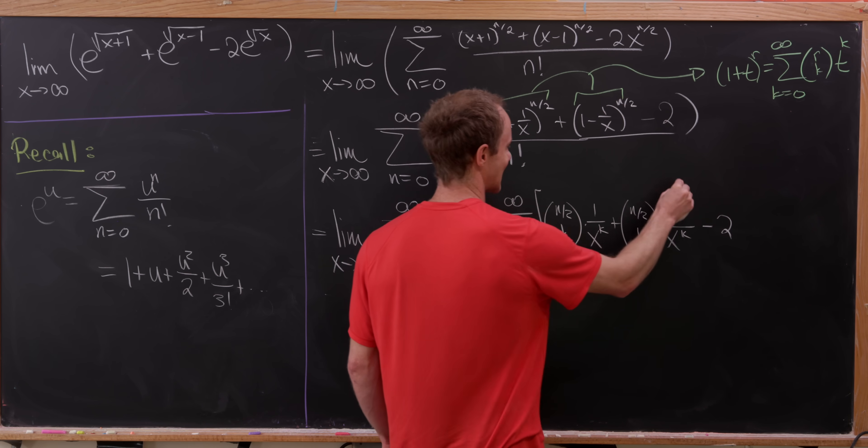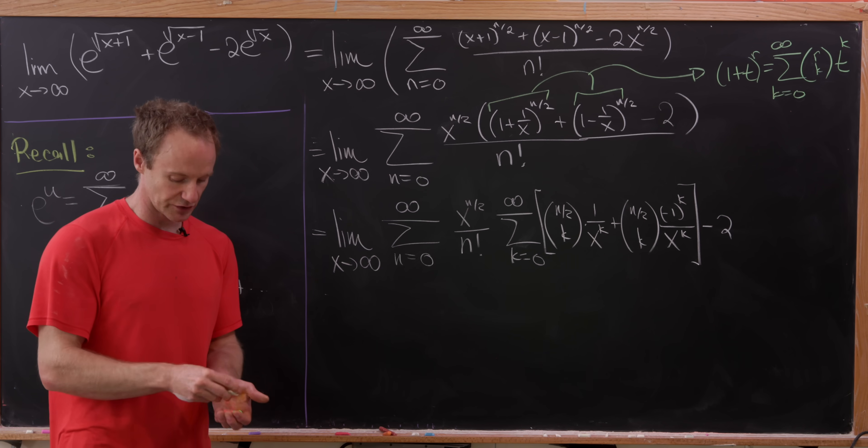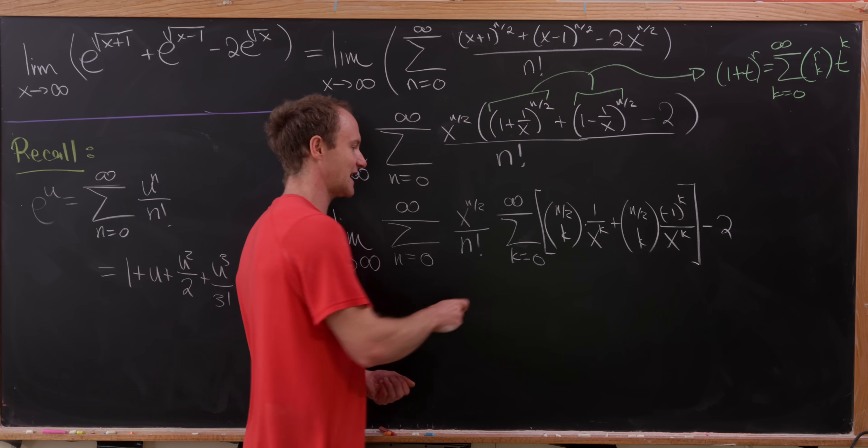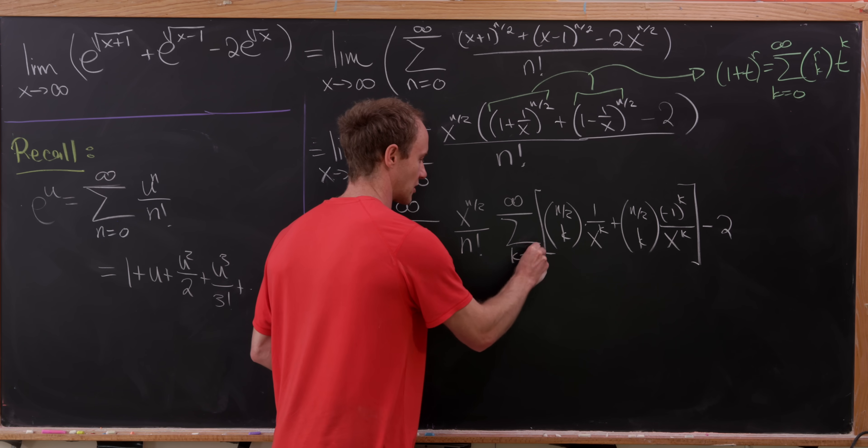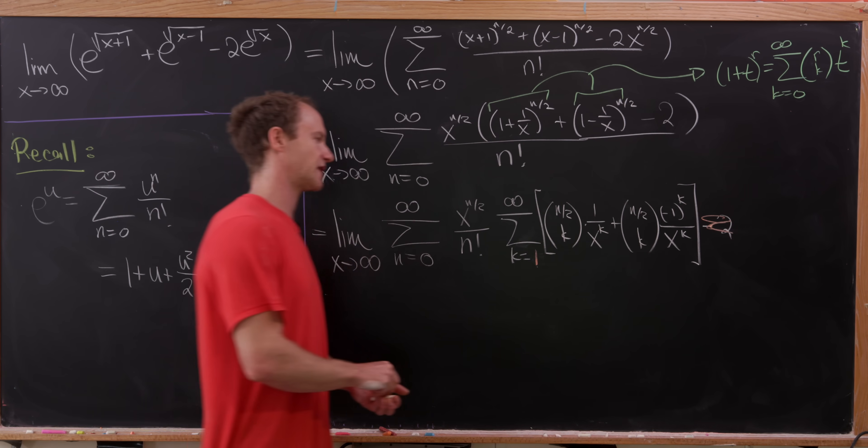But that's in fact outside of the expansion. But now let's notice that that minus 2 can be gotten rid of because it just cancels the 0th term in this expansion. So we can change that from starting at 0 to starting at 1.